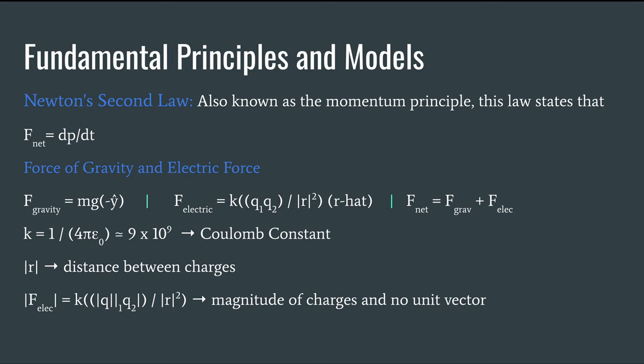Q1 and Q2 would be your two charges. You're dividing that by the magnitude of r, which is the distance between your charges squared. And then r hat would be from your source to your observation. It's important to note here that if you do the magnitude of the electric force, then you get rid of the r hat and you just take the magnitude of your charges.